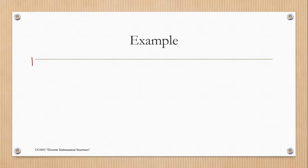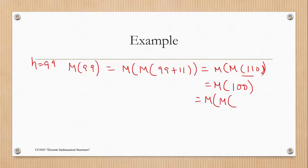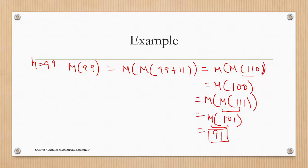We will solve the McCarthy function for n = 99. Since 99 ≤ 100, the second case applies: M(99) = M(M(110)). Since 110 > 100, M(110) = 110 - 10 = 100. Then M(99) = M(100). Since 100 ≤ 100, M(100) = M(M(111)) = M(101). Since 101 > 100, M(101) = 101 - 10 = 91. So the value of the McCarthy function for n = 99 is 91.